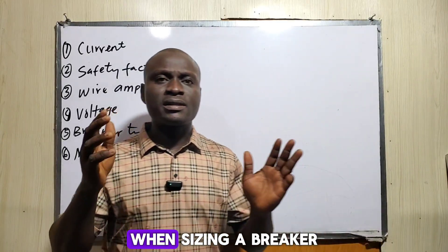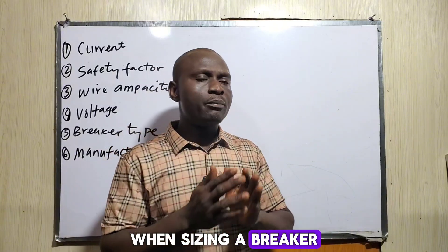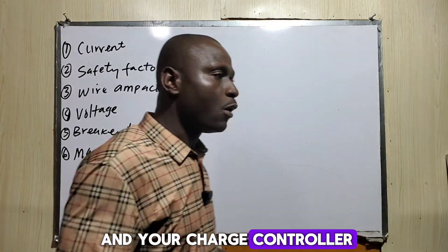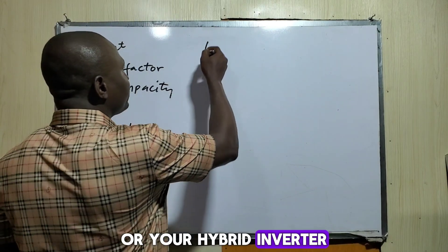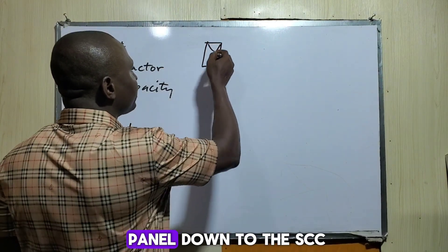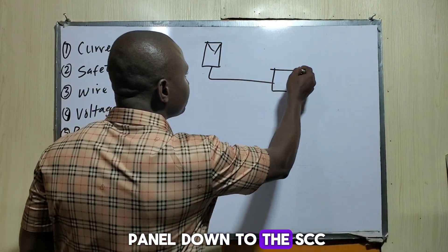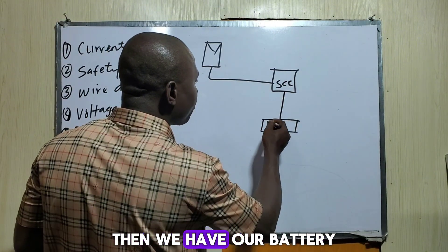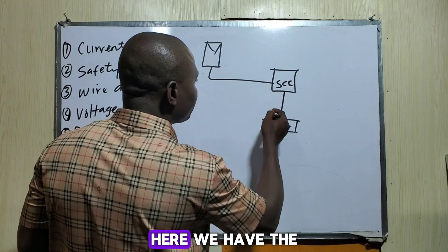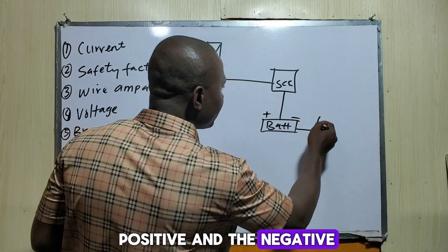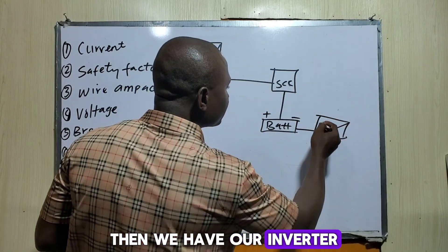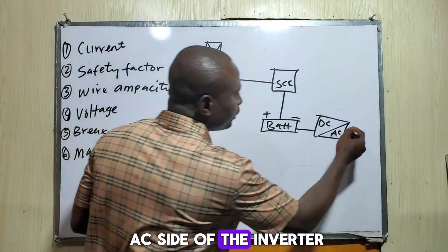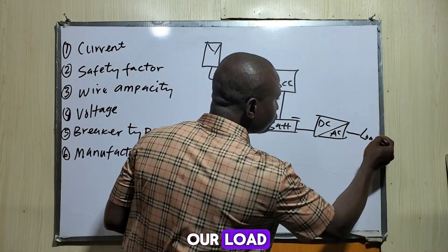In a PV system, when sizing a breaker between your solar panel and your charge controller or hybrid inverter, this is the solar panel down to the SCC, which is the solar charge controller. Then we have our battery with positive and negative, our inverter, and the DC side and AC side of the inverter, and our loads.